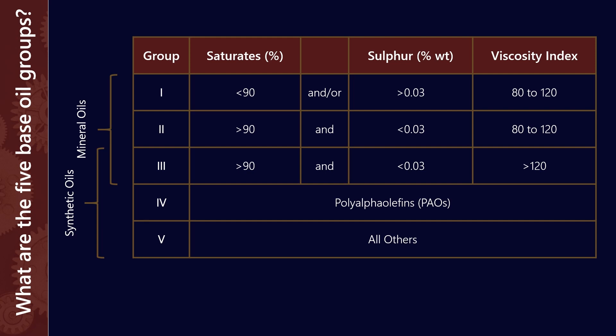Synthetic oils can actually come from either group 3, group 4, or group 5, and that's for some different reasons. Let's look at group 4 first. They are all the poly-alpha olefins, which are, by definition, all synthetics. So if you have a lubricant that is manufactured from group 4 base stocks, it is, by definition, a full synthetic.